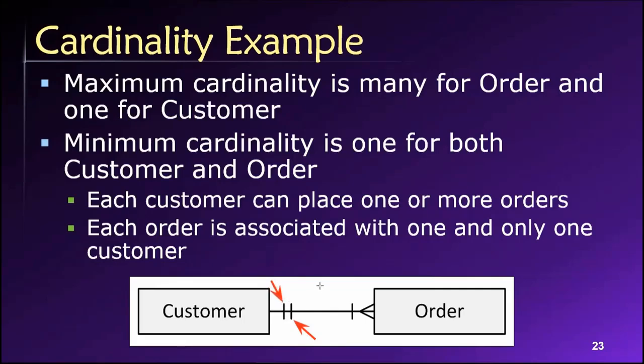That is, an order cannot exist unless it is associated with a customer. That's the minimum cardinality. And each order cannot be associated with more than one customer, right? That's the maximum cardinality. So this tells us something about the way that this business operates, right? In order for an order to be placed or for an order to exist, it must be linked to exactly one customer. No more and no fewer.